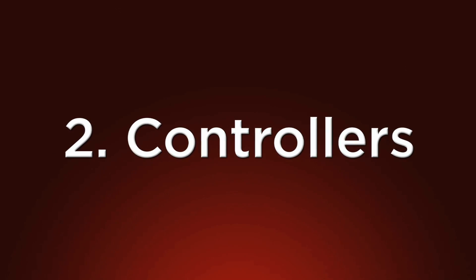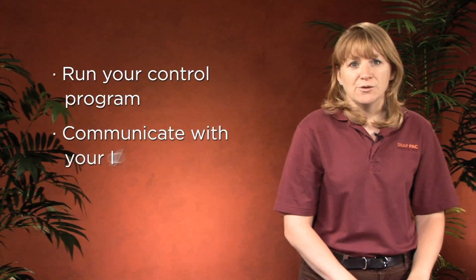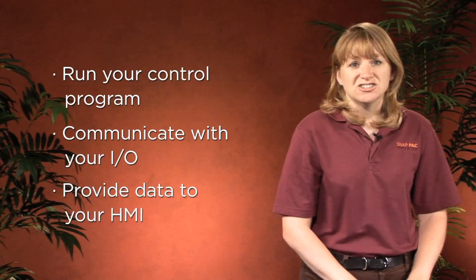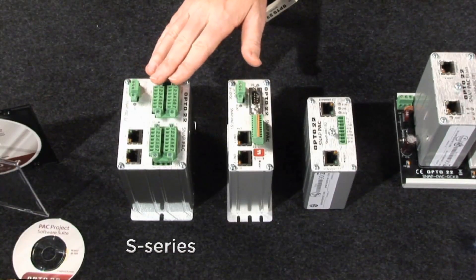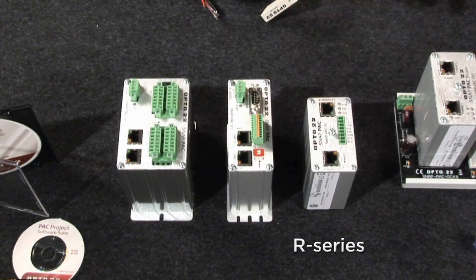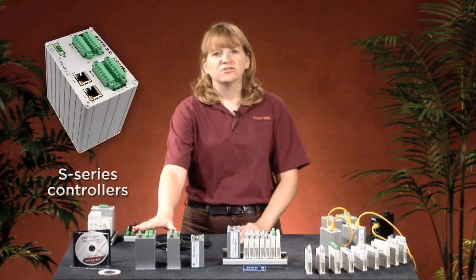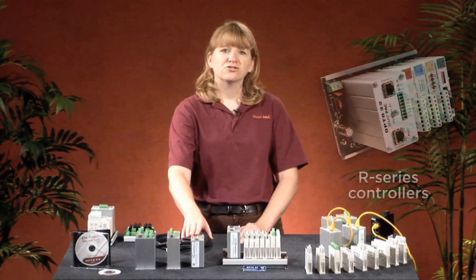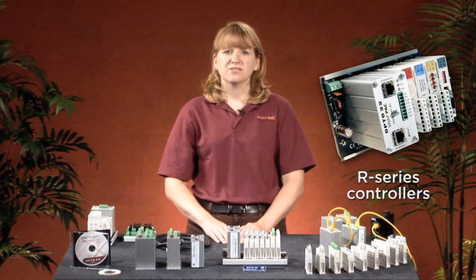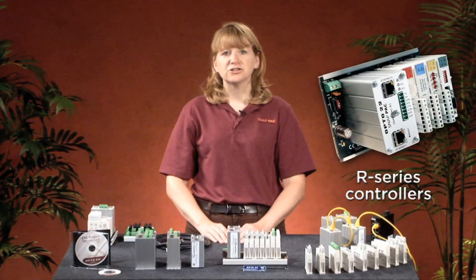Now let's move on to the second part of the SNAP PAC system: the controllers. PACs, or Programmable Automation Controllers, run your control program, communicate with your I/O, and provide data to your HMI. We offer two types of SNAP PAC controllers: Standalone S Series and Rack Mounted R Series PACs. Standalone controllers are best for large, distributed systems with many points of remote I/O. Rack Mounted controllers are ideal for smaller systems with smaller point counts, like cell control.